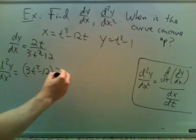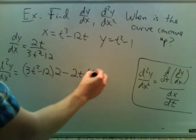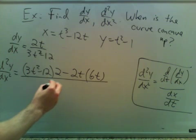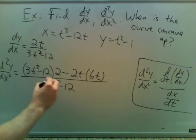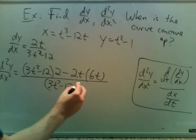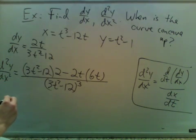times 2, minus 2t, times 6t, all over that squared. And I have another one, so I actually cube it.